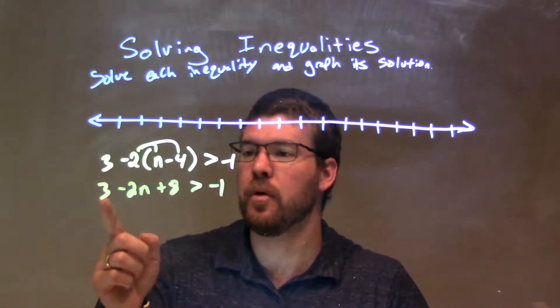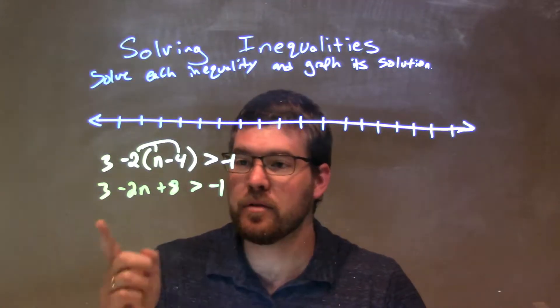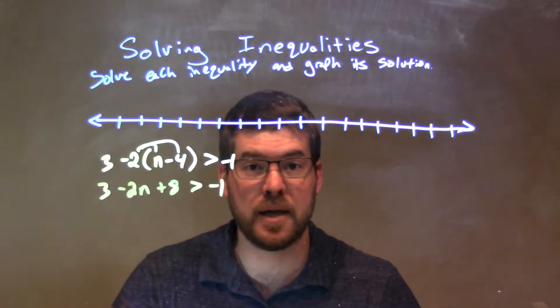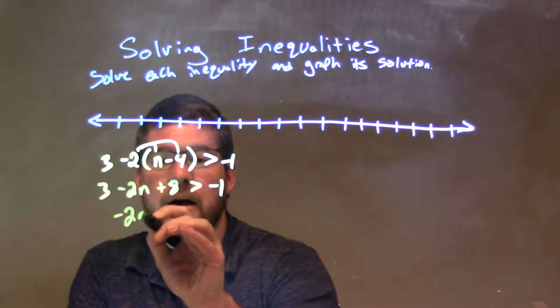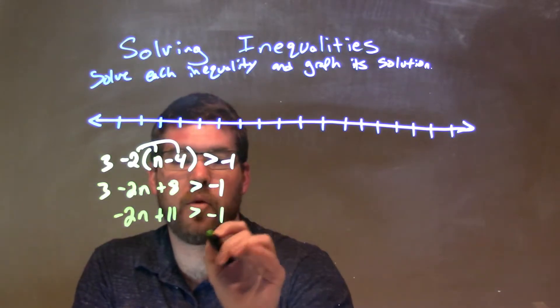Now, I'm going to combine my two parts. I have positive 3 and positive 8 that need to be combined together, and that is going to be positive 11. So, negative 2n plus 11 is greater than negative 1.